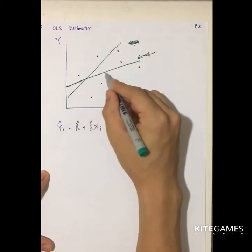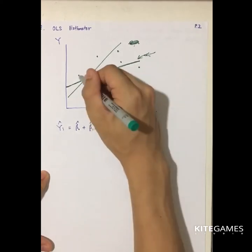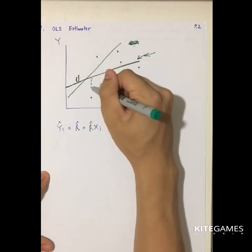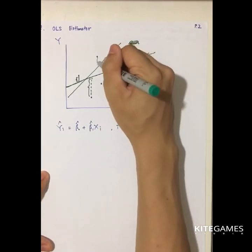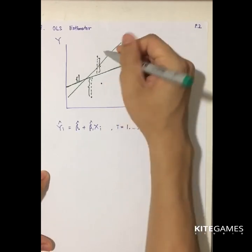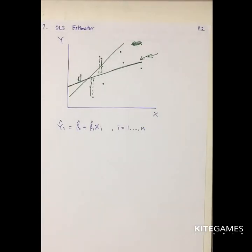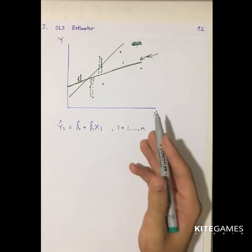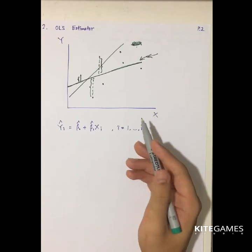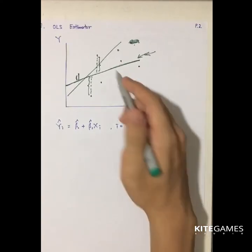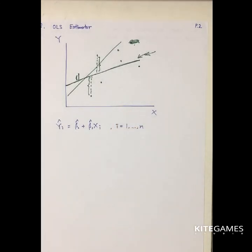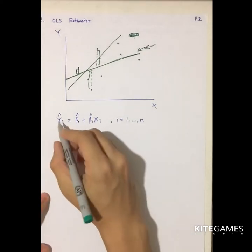Which line can represent the data better? For this line, we can see the error terms: the vertical distance for each data point is the error of the estimation. The smaller the error, the better the estimation. So in mathematics, we have a way to minimize the error terms. We want to find a line — B0 plus B1xi plus Ui — and minimize the error terms.